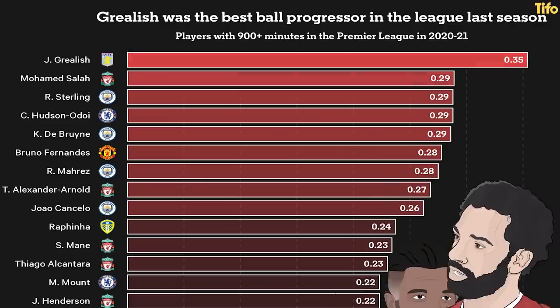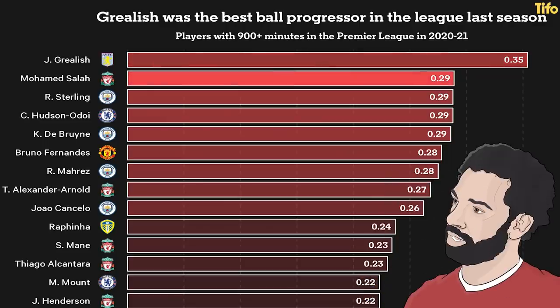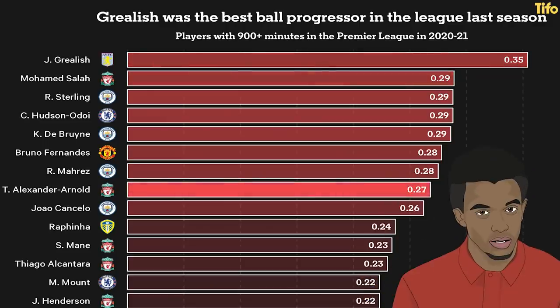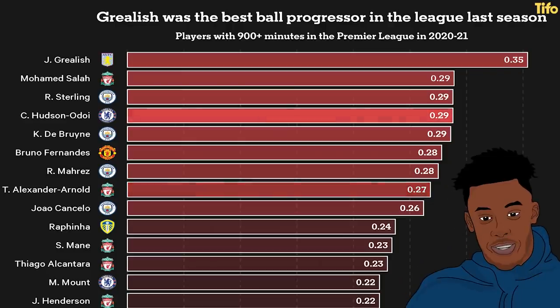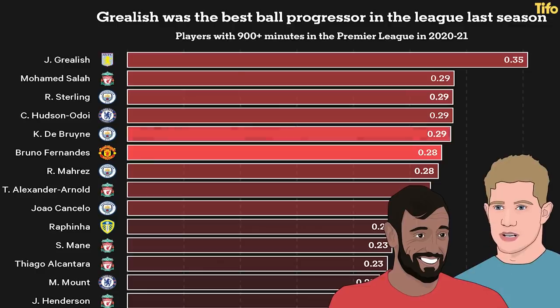Elsewhere, Mohamed Salah's ability to run with the ball on the break made him Liverpool's most dangerous player, slightly ahead of teammate Trent Alexander-Arnold. Callum Hudson-Odoi is fourth on the list, perhaps showing just how underrated he is as both a passer and a carrier. Bruno Fernandes and Kevin De Bruyne, two high-risk, high-reward passers, both make the top ten.